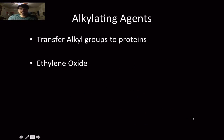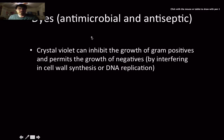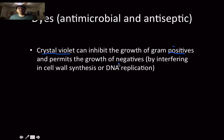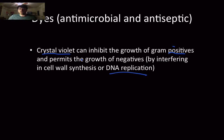There are also antimicrobial and antiseptic dyes. Crystal violet, which we use in gram staining, can inhibit the growth of gram-positive bacteria and permits the growth of gram-negative ones by interfering with cell wall synthesis or DNA replication. If crystal violet is bound to a bacterium, it cannot reproduce or form a new cell wall.